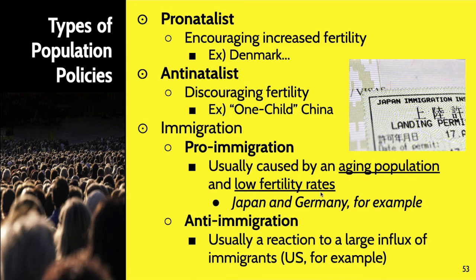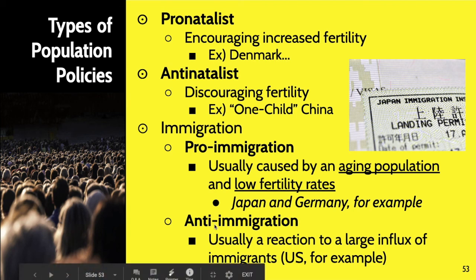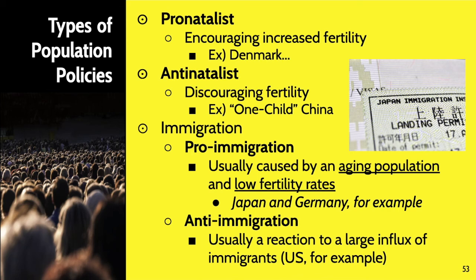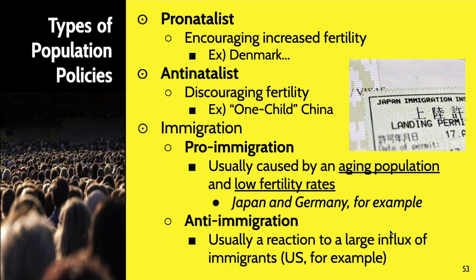So if you have an aging population and low fertility rates like Japan or Germany, then you might turn to pro-immigration. Whereas on the other side, if a country is anti-immigration, that could mean many different reasons — we've seen a lot of anti-immigration stances come from overpopulation, we've seen them stem from culture clashes. We've also seen a lot of times where it's a reaction to a large influx of immigrants. In the United States, for example, we're a country built on immigrants, but in the last few years — really the last decade — we've seen a large influx of immigrants from Central America and Mexico. Because of that, the policy of the federal government has become very anti-immigration.